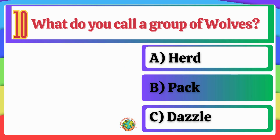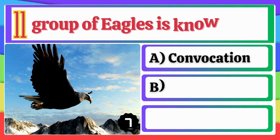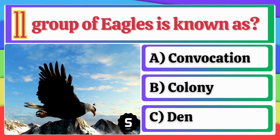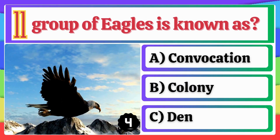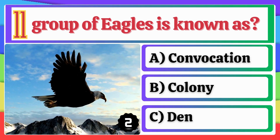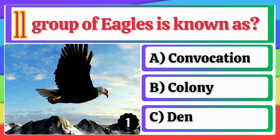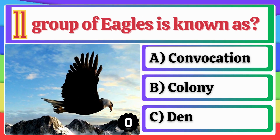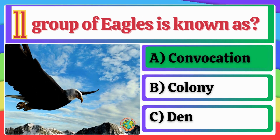A group of Eagles is known as? Convocation, Colony, or Den? Convocation is the correct answer.